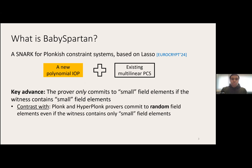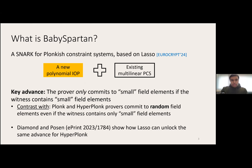This is in contrast with other proof systems for Plonkish like Plonk and HyperPlonk, where provers commit to random field elements even if the witness contains only small ones — even 16-bit witness elements require committing to vectors with elements drawn randomly from the entire finite field. There is another paper posted around the same time as Baby Spartan by Diamond and Posen, showing how Lasso can unlock the same advance for HyperPlonk. The two systems are very similar; we use Spartan while that paper uses HyperPlonk, which is more suitable for their setting.